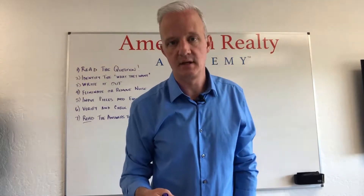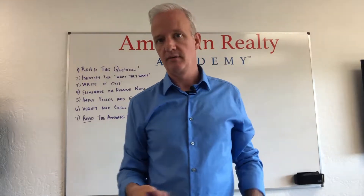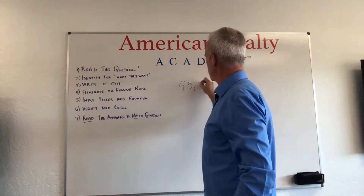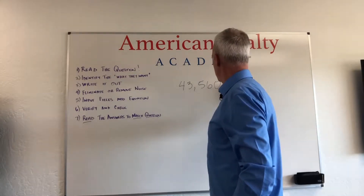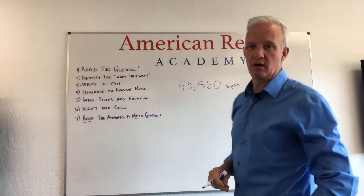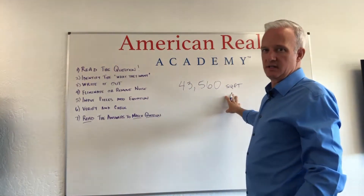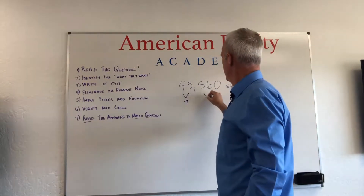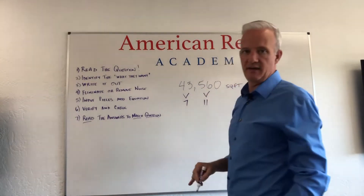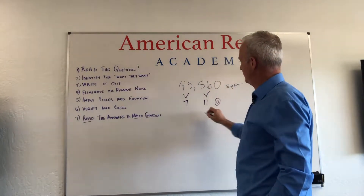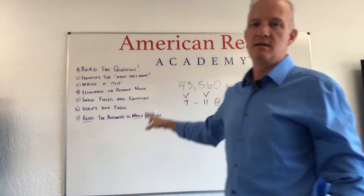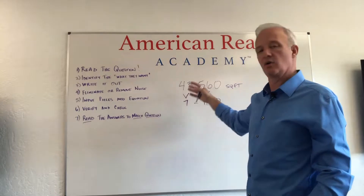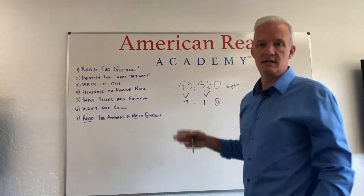A lot of people get freaked out because they start seeing numbers. Some of the stuff you just got to remember. For example, how many square feet in one acre? One acre has 43,560 total square feet. If you can't remember 43,560, here's an easy acronym: 4 plus 3 is 7, 5 plus 6 is 11, and at the end of that you've got a zero. Here's how we teach it in class: 7-11 sells donuts. So 43,560 — a quick, easy way to remember it.